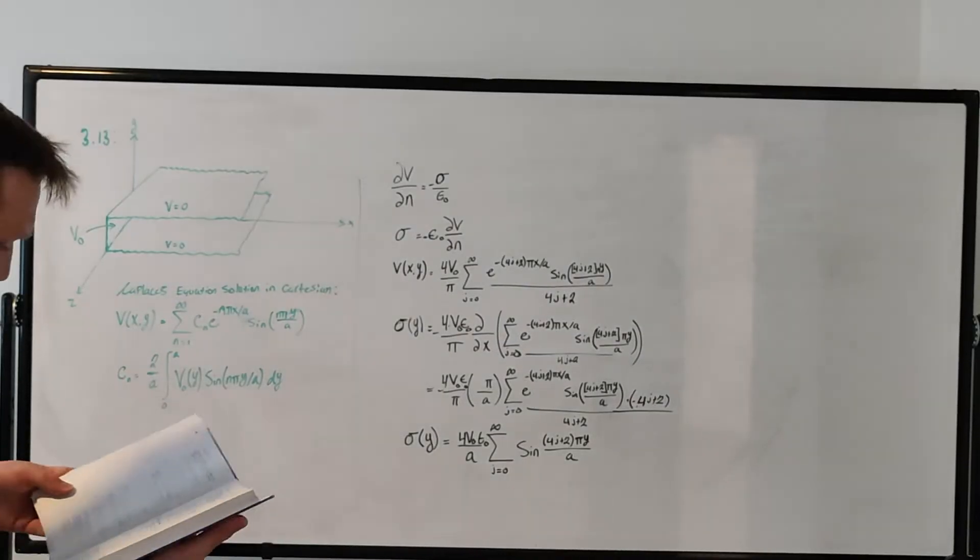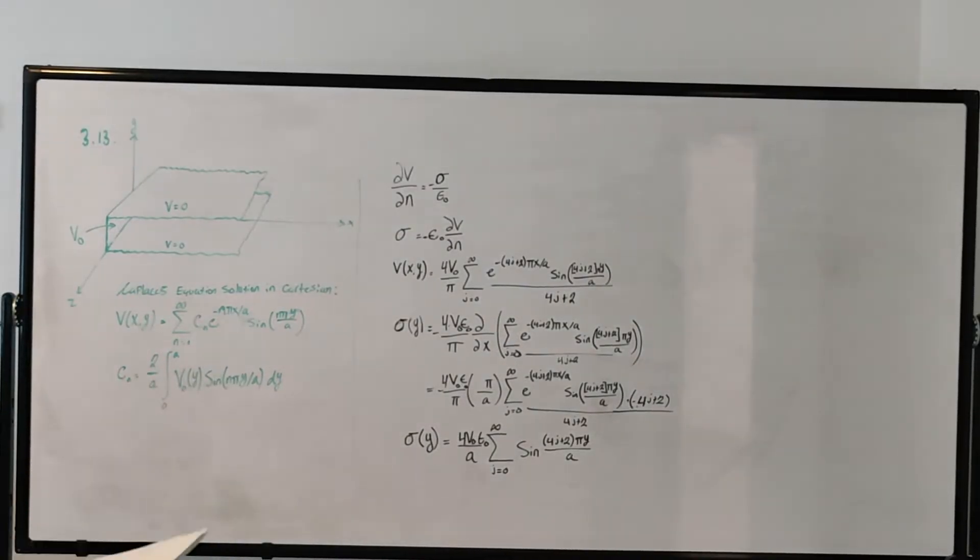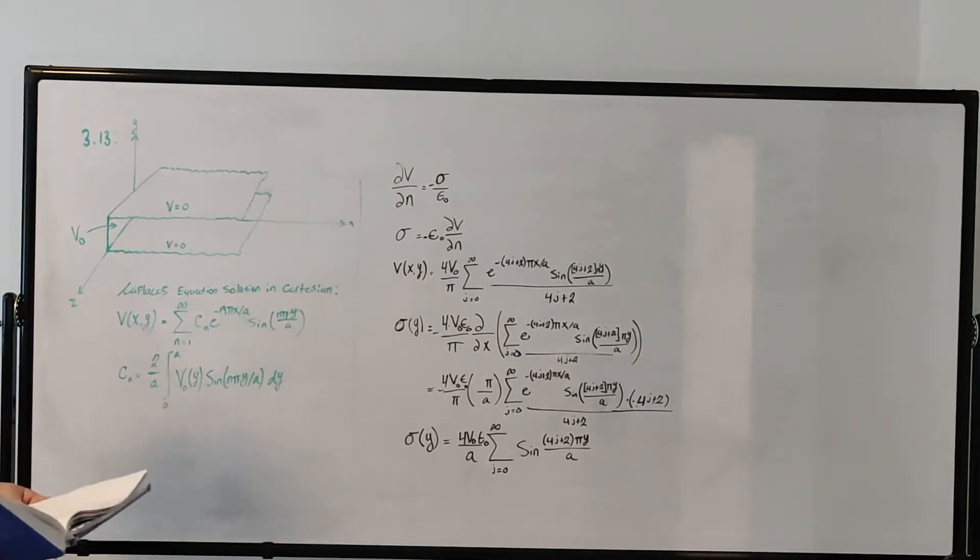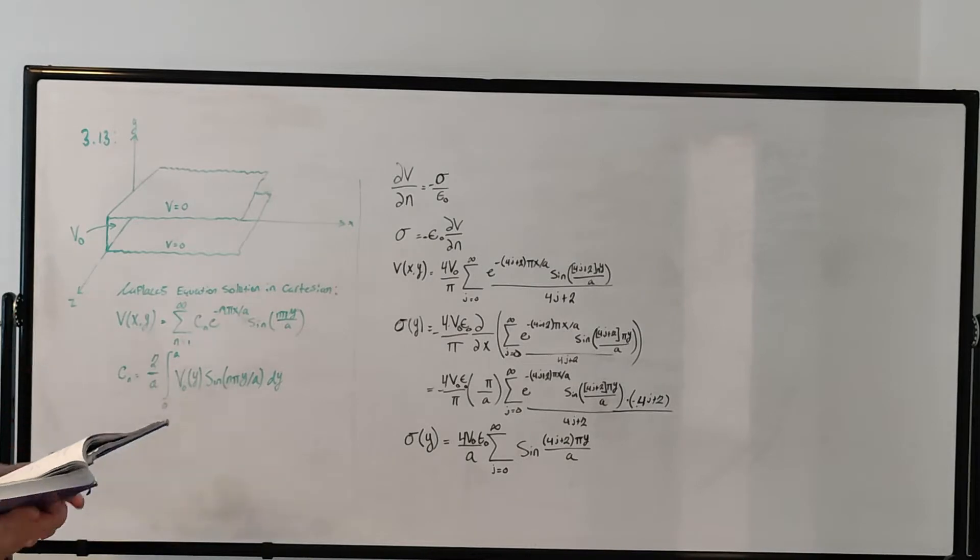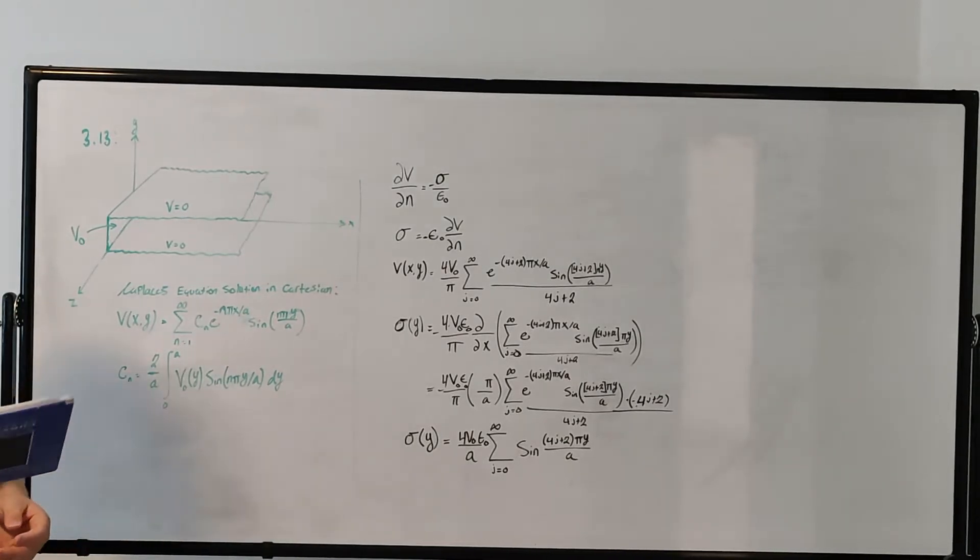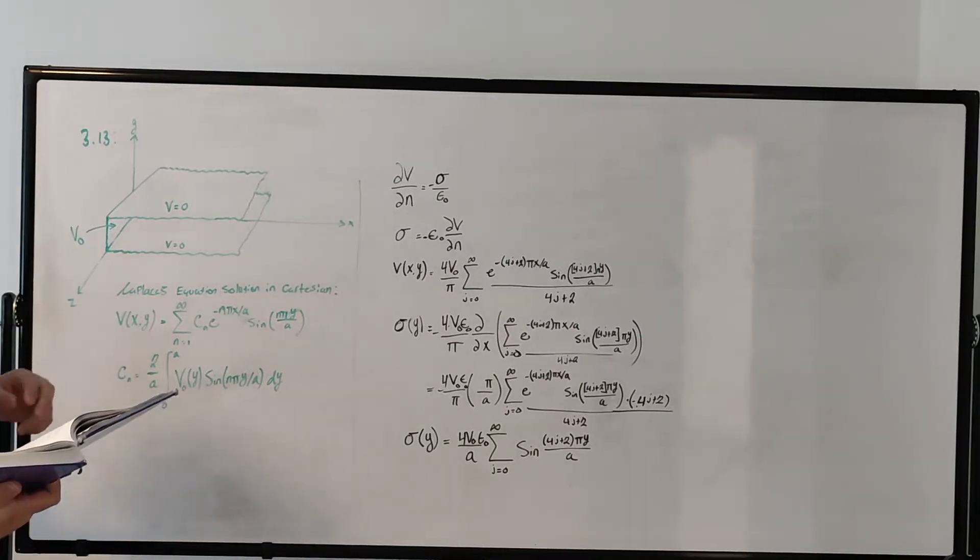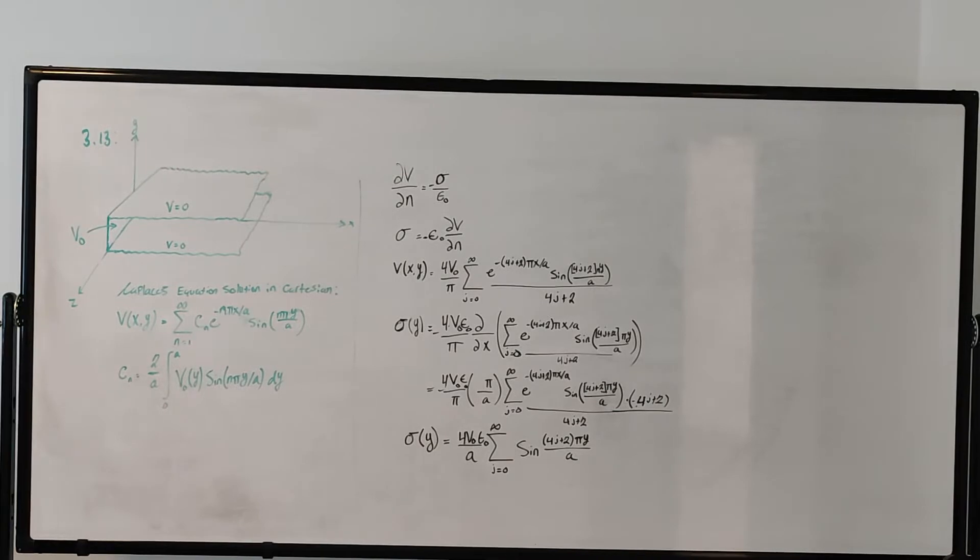Hello everyone, welcome to problem 3.14 of David Griffith's Electrodynamics. This problem states that for the infinite slot in example 3.3, which I've drawn here, determine the charge density sigma as a function of y on the strip at x equals zero, assuming it is a conductor at a constant potential V0.